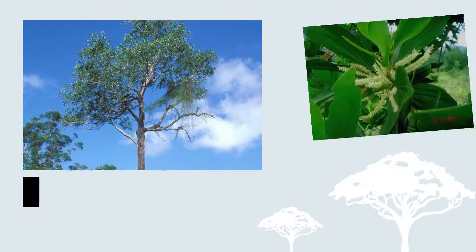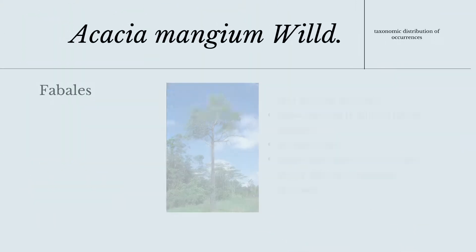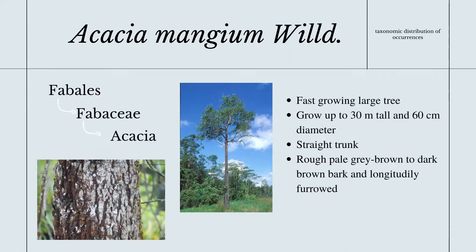Another example of invasive alien species is Acacia mangium, which will be discussed further in this video. Acacia mangium is a species placed in the Acacia genus under the Fabaceae family and order Fabales.